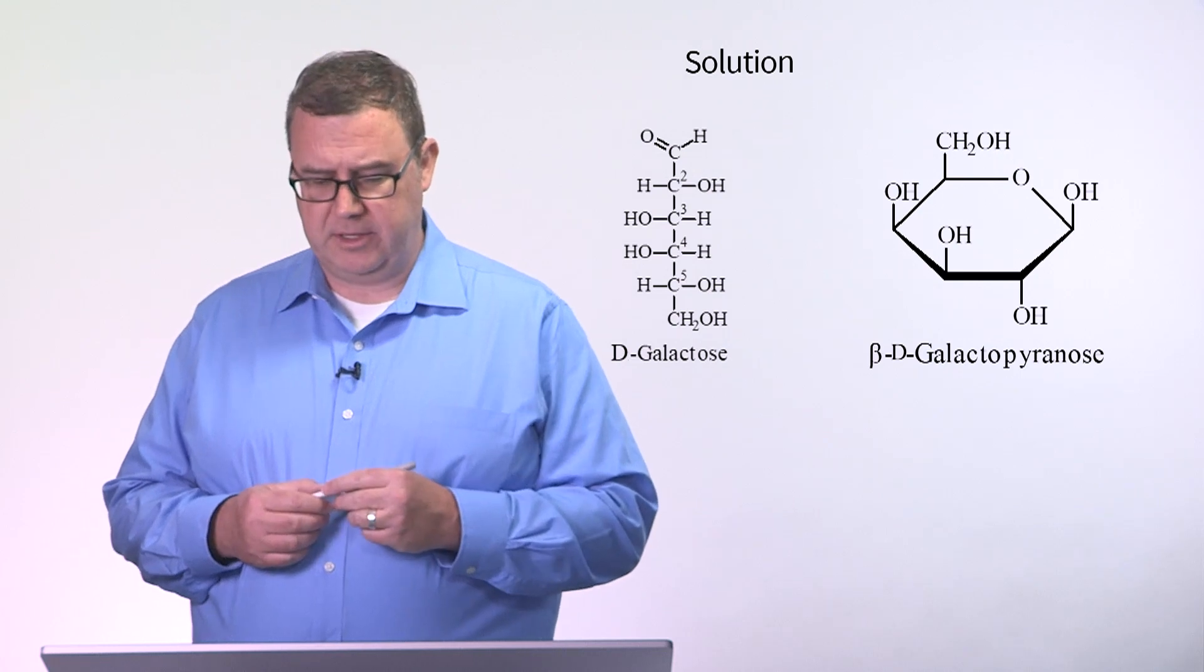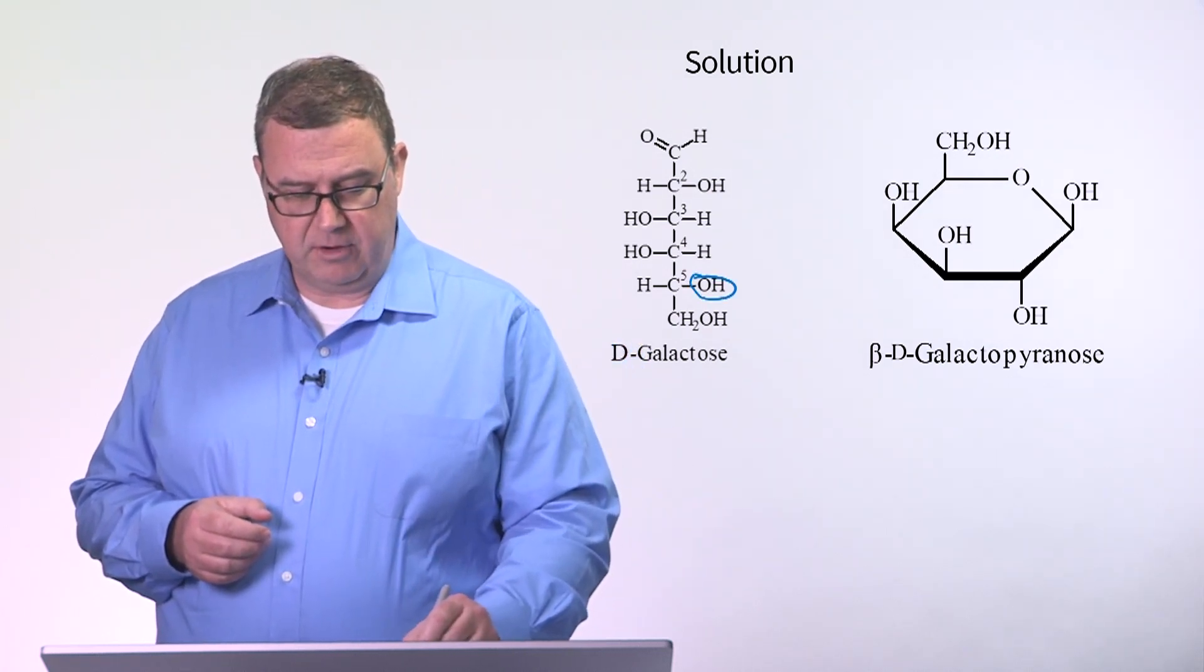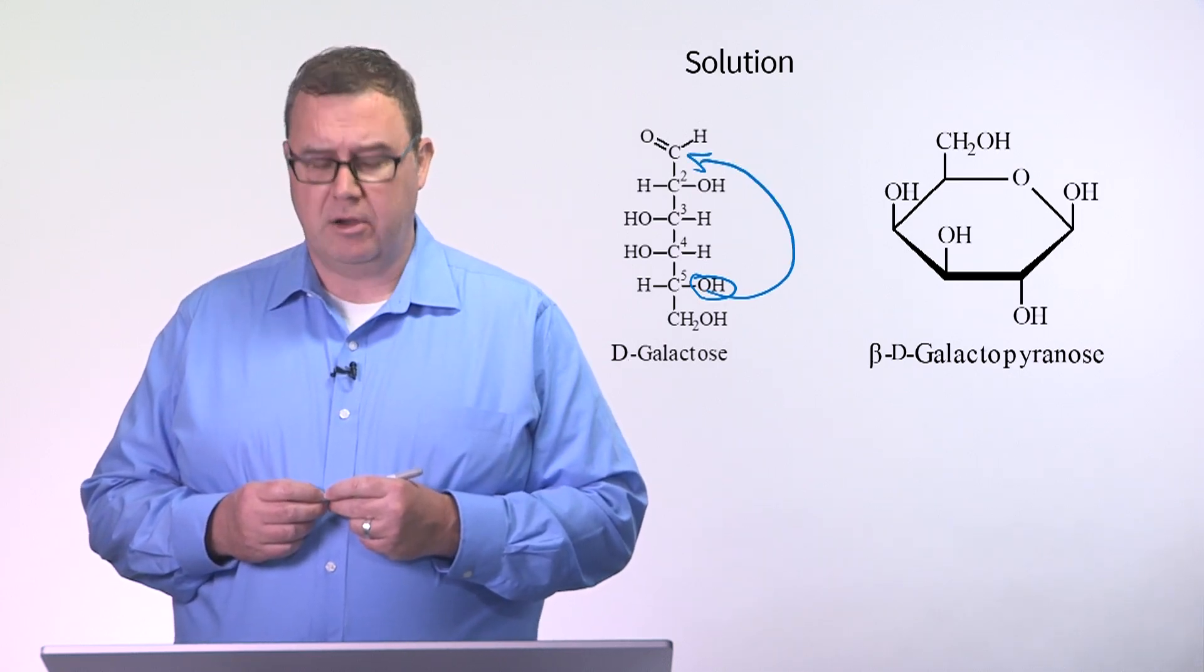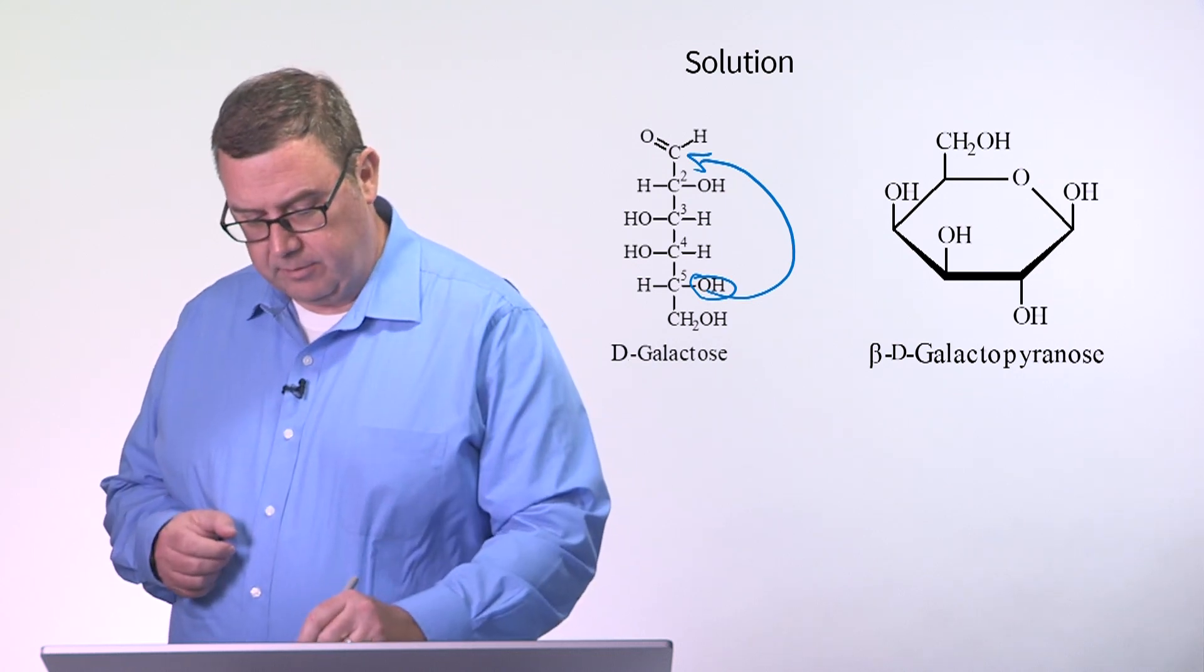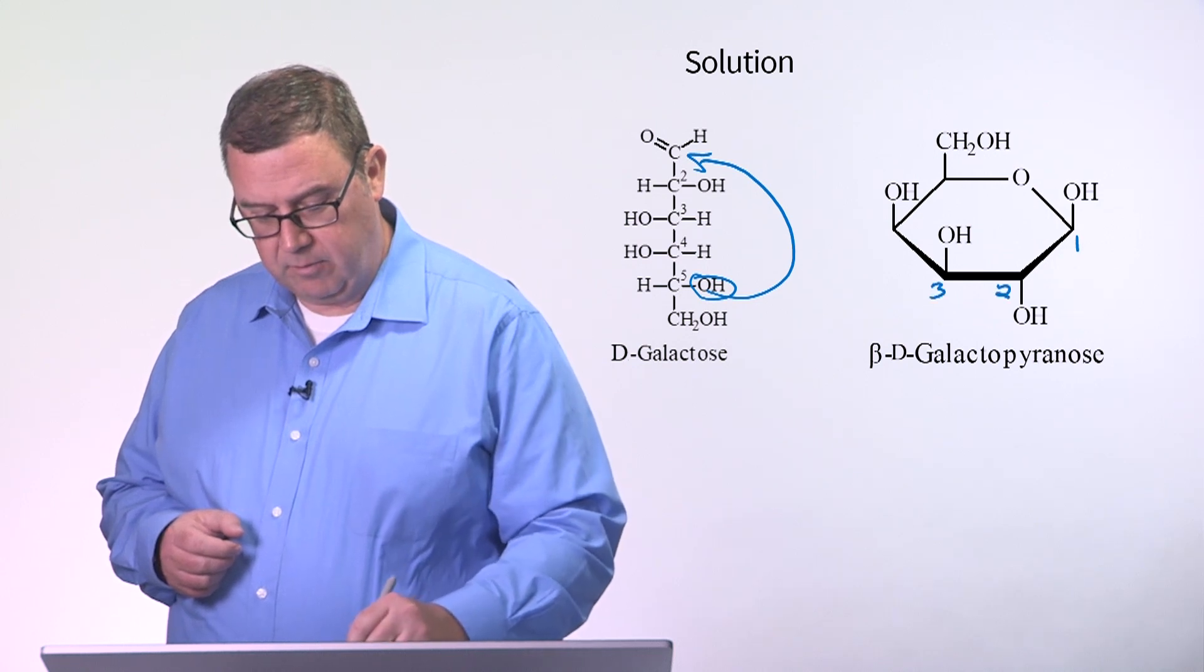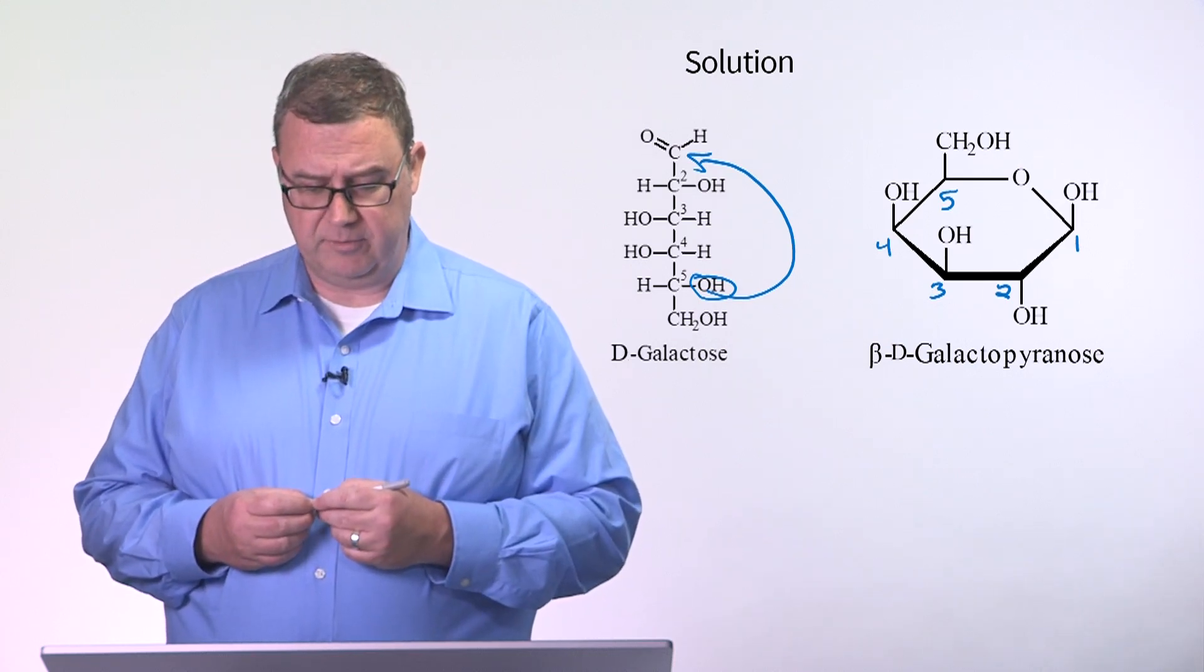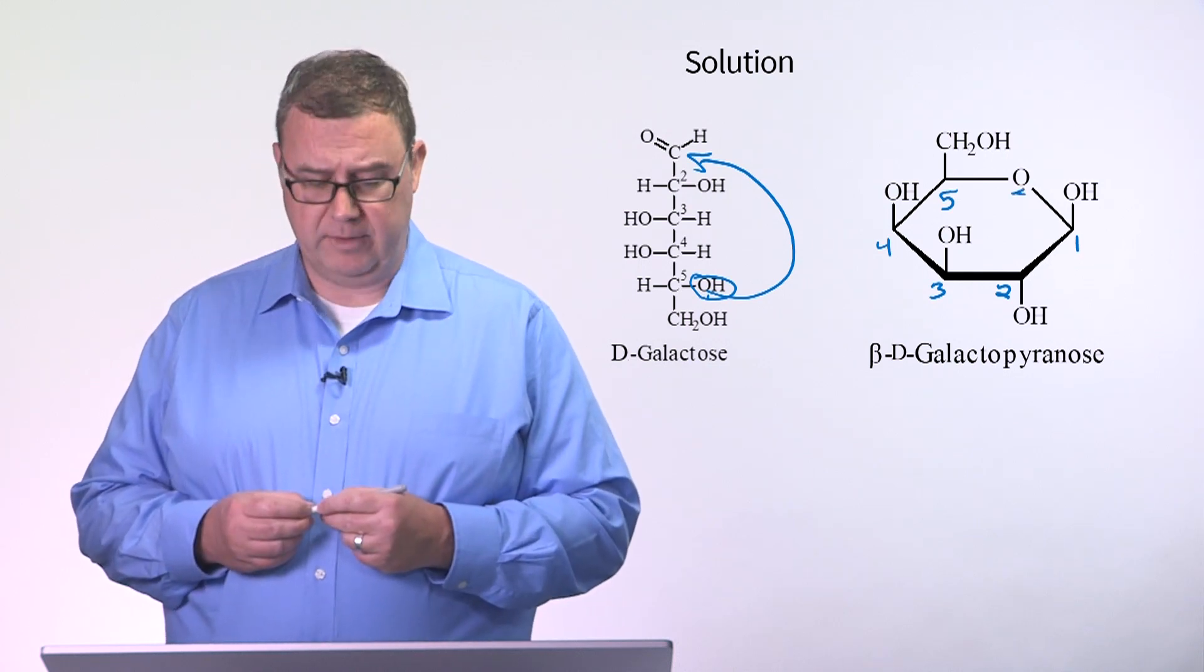So if we look at the solution here, we see that again this hydroxyl group on the five carbon has formed this ring working through that anomeric carbon, the one carbon. If we wanted to number the carbons around the ring, we can do that. We see there's where our other five carbons are coming from. Again, this OH group is now that oxygen that's found in the ring.